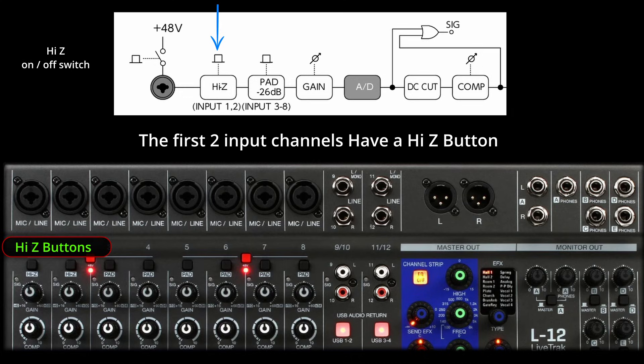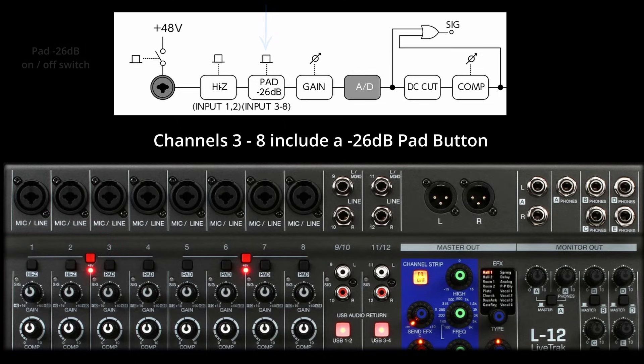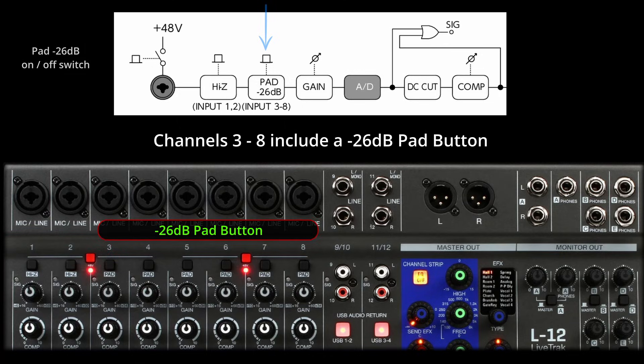All channels one through twelve accept line level signals, with channels one through eight also accepting microphone inputs. Line level inputs do not need a preamp, unlike microphone signals. Channels three through eight on your mixer include a Pad button. The Pad button, when engaged, lowers the input sensitivity of the channel by a fixed amount — usually minus 20 dB or minus 26 dB. On the L12 it's minus 26 dB. This reduction in signal strength occurs before the signal reaches the preamp, helping to manage overly strong audio inputs.